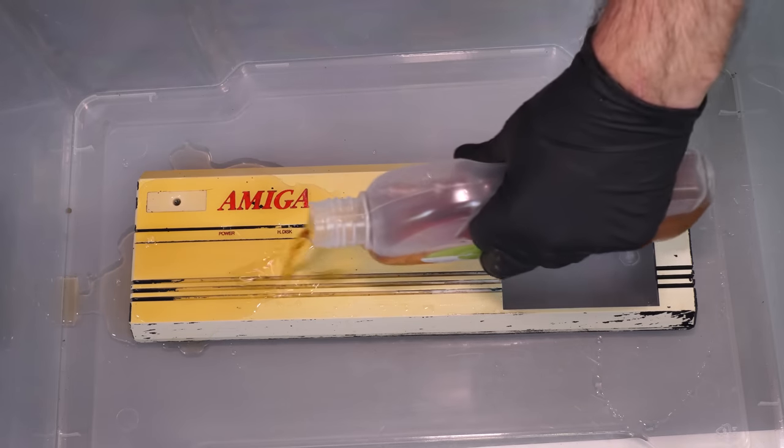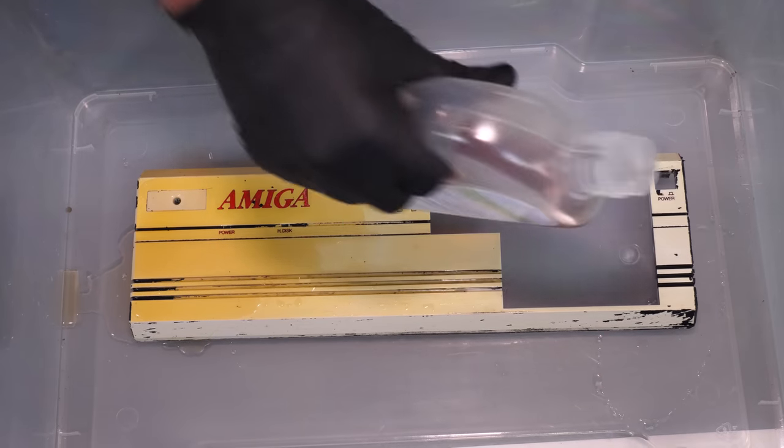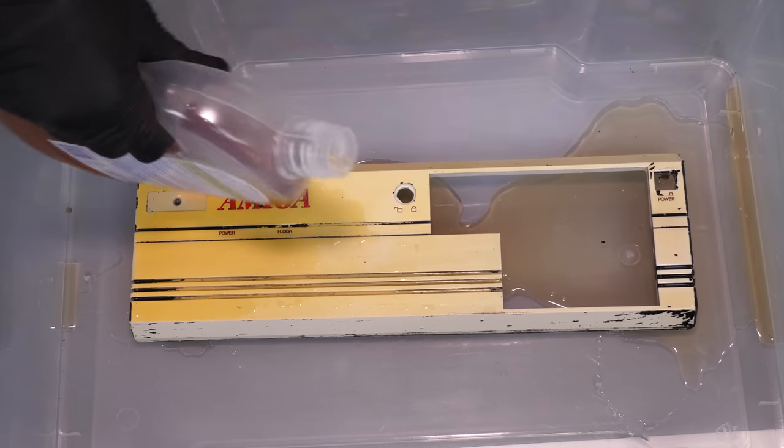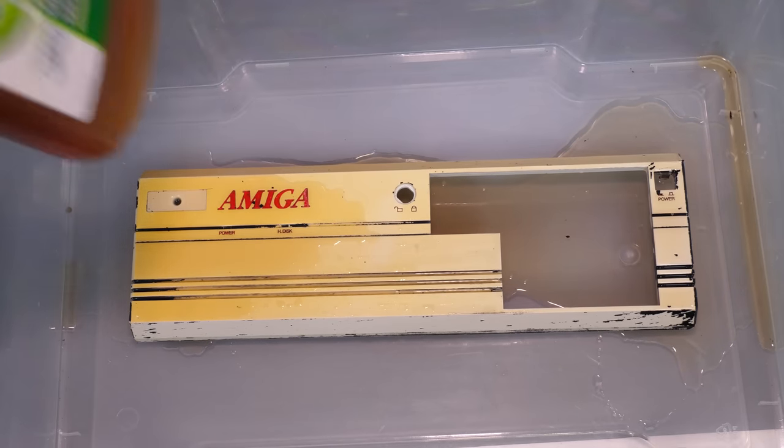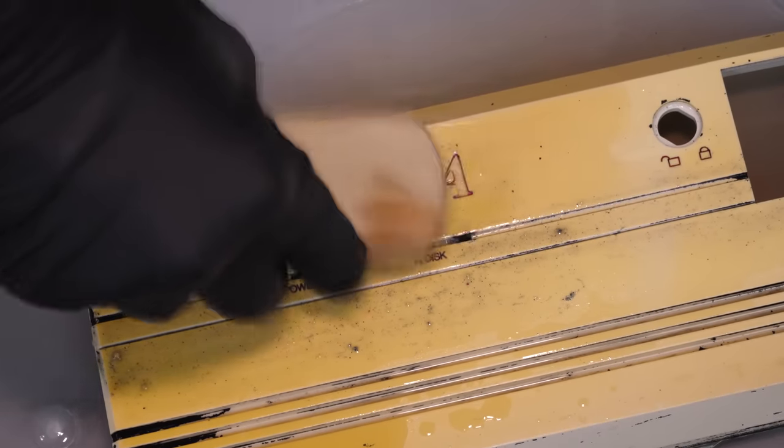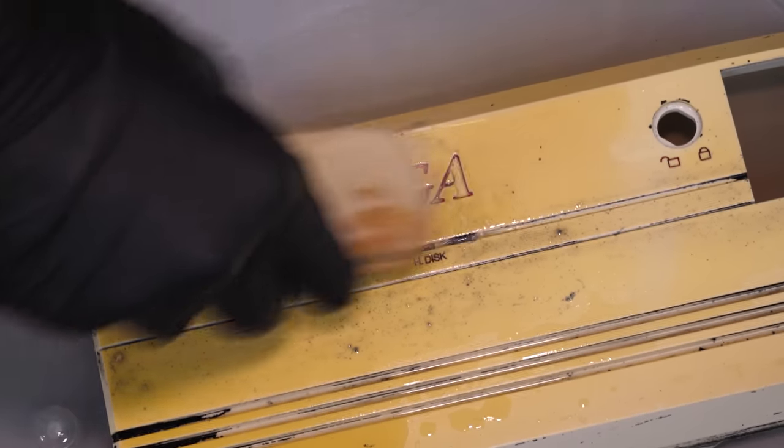After the first pass I then went at it again, this time with some Dettol. I like the neat Dettol because it's got a thicker viscosity than the IPA and it really kind of clings on to the nooks and crannies like in the Amiga logo. So I put that on and then I just let that go to work for a while and got scrubbing again.